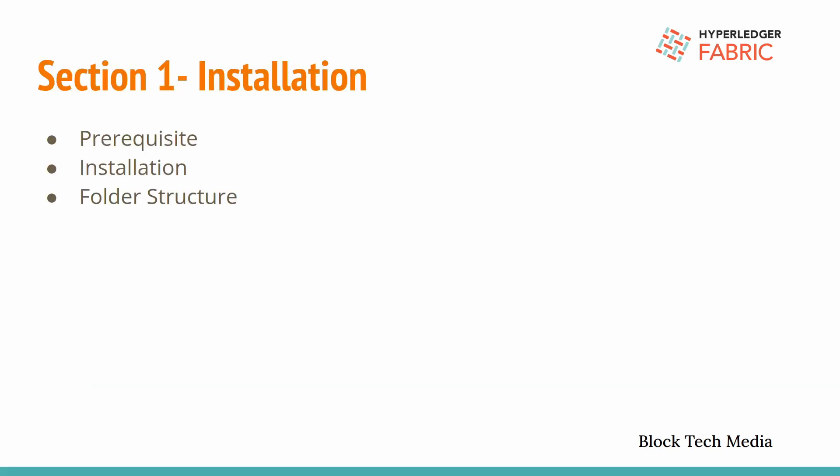Coming to the first section, that is the installation part. First of all we will go through the prerequisites required for creating the network, and we will install all these prerequisites if we don't have them. In the third section we will deep dive into the folder structure of the application — what kind of different files and folders are there. We will go through each and every file. I will try to keep all these videos within 5 minutes so that it would be a great learning experience.